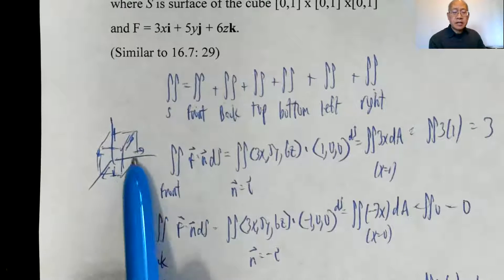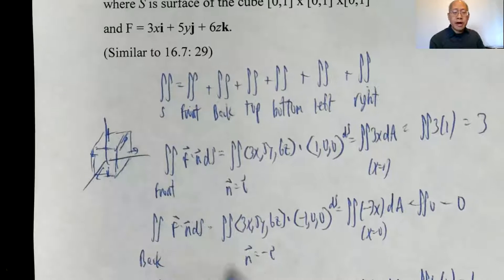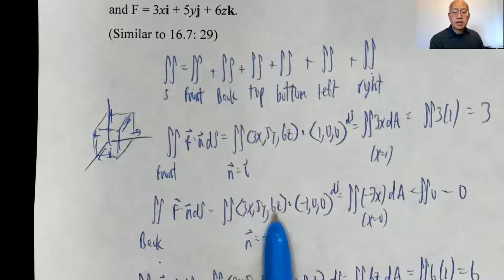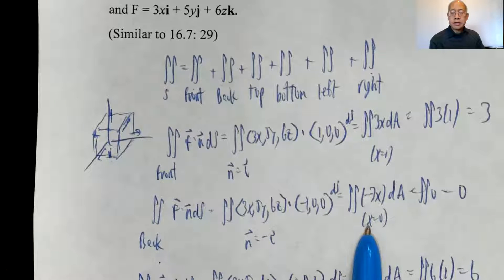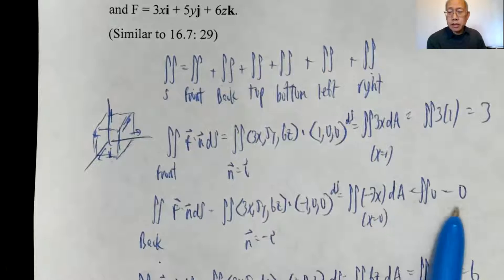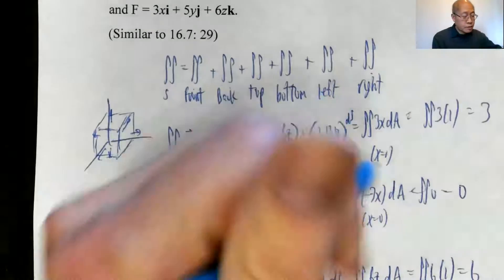Back: F dot n ds, the unit normal vector outward is negative i. So (3x, 5y, 6z) dot (-1, 0, 0), that's negative 3x. But x is 0, so when I plug them in integrating 0, and that comes out to be 0.